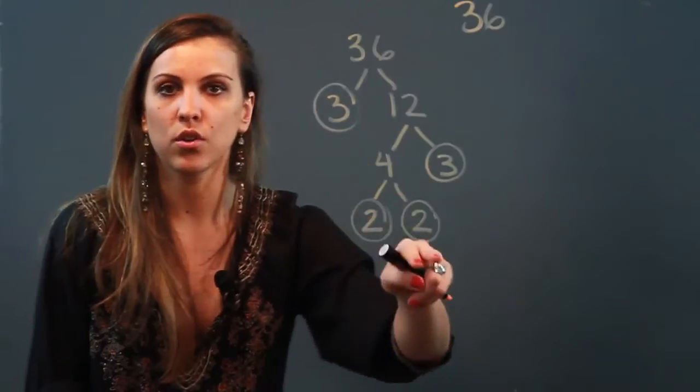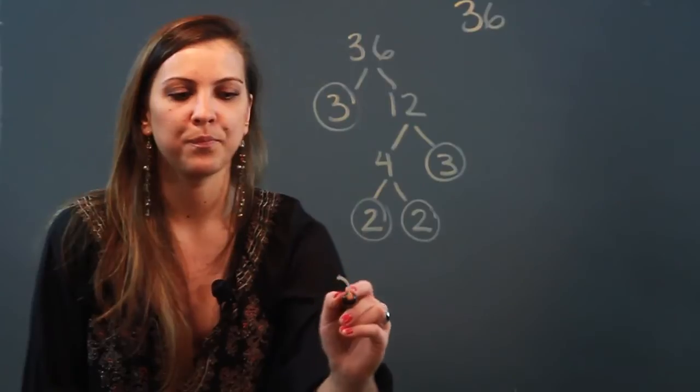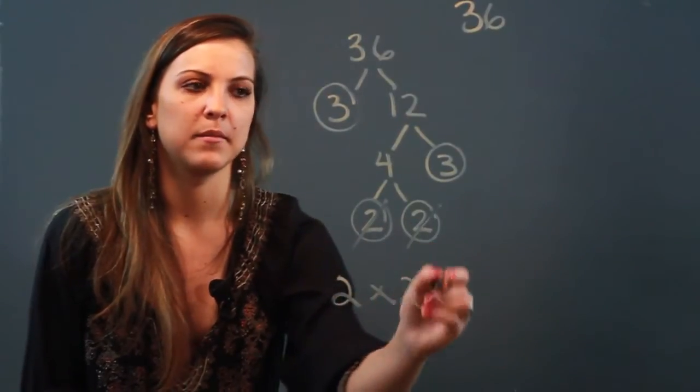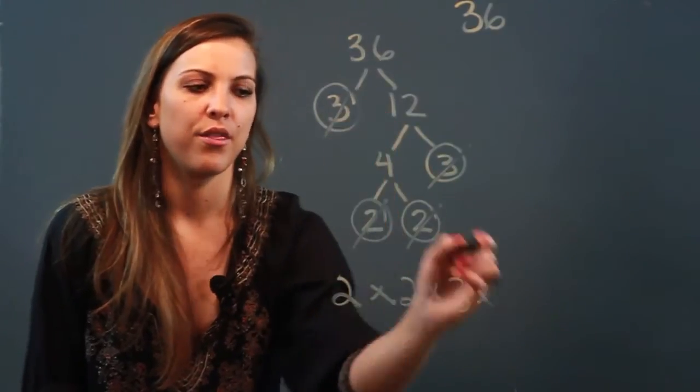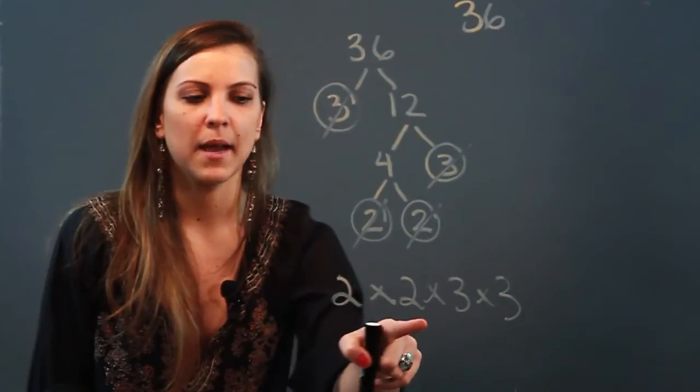Now that I'm done breaking it down, all the ends of my branches are circled because they're prime. I can go ahead and write it out as a prime factorization, so I have 2 times 2 times 3 times 3.